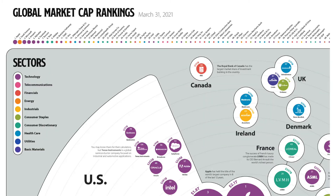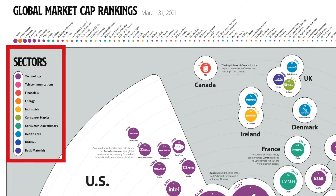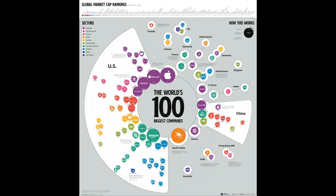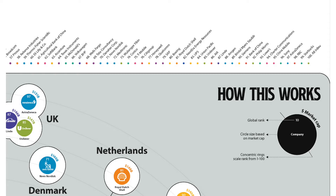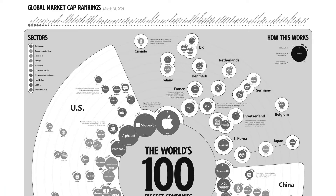How do we read the diagram? There are four points. First, the business sectors are separated by colors. Second, the companies are grouped by countries. Third, each company is represented by a ball. Fourth, the bigger the company, the bigger the ball, and it's also closer to the middle of the diagram.